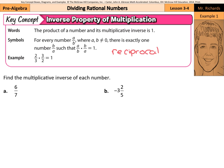So when we're looking to find the multiplicative inverse of each number, the multiplicative inverse of 6/7 becomes 7/6. So 7/6 is the multiplicative inverse of 6/7. How you know this is true? 6 times 7 is 42. 7 times 6 is 42. And 42/42 equals 1.